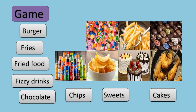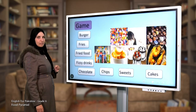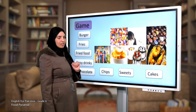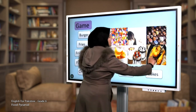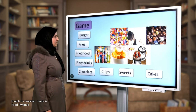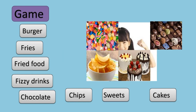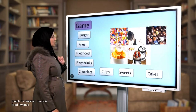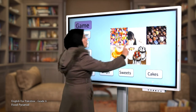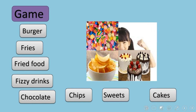Excellent, you are great! Where is the fried food? Can you see the fried food? This is the fried food. What about fizzy drinks? Great, these are fizzy drinks. And now where is the chocolate? This is the chocolate — excellent!